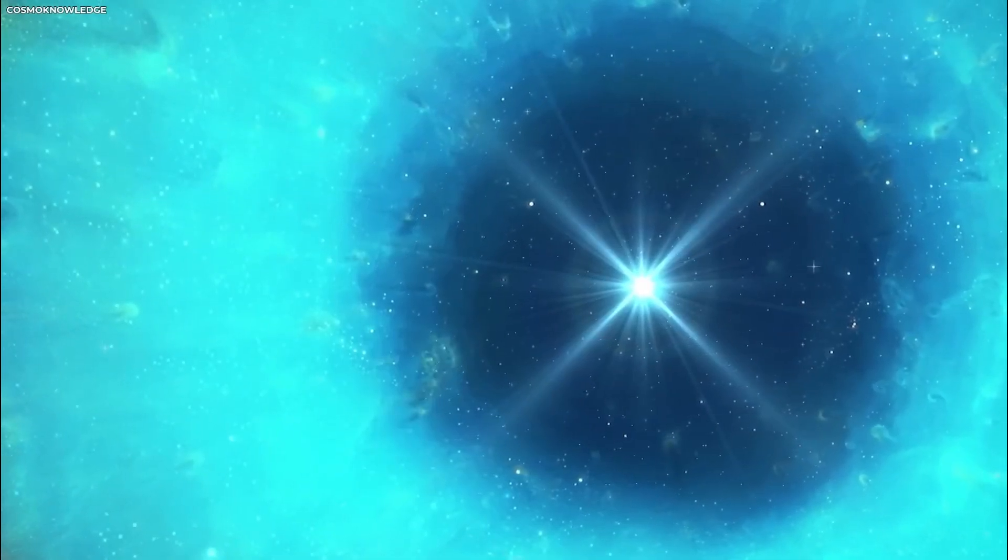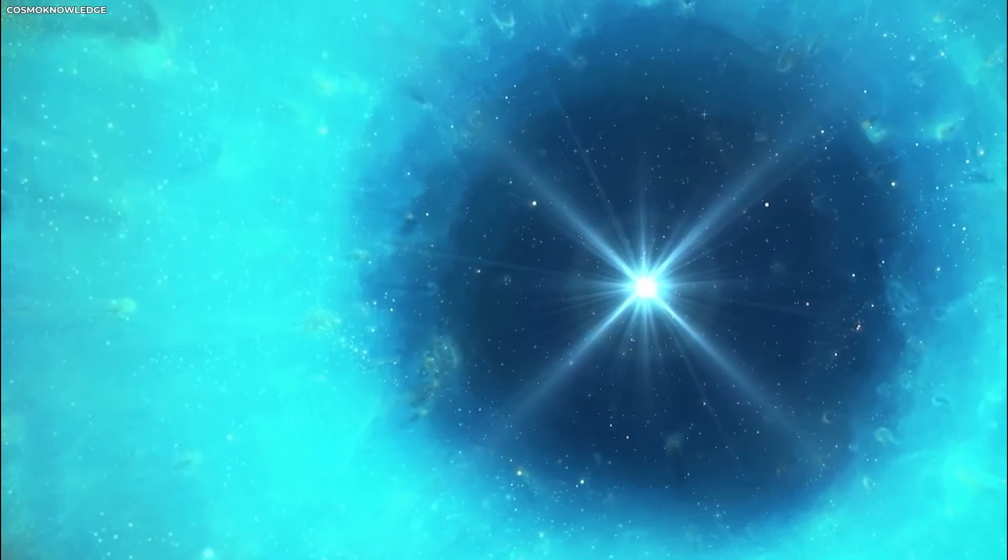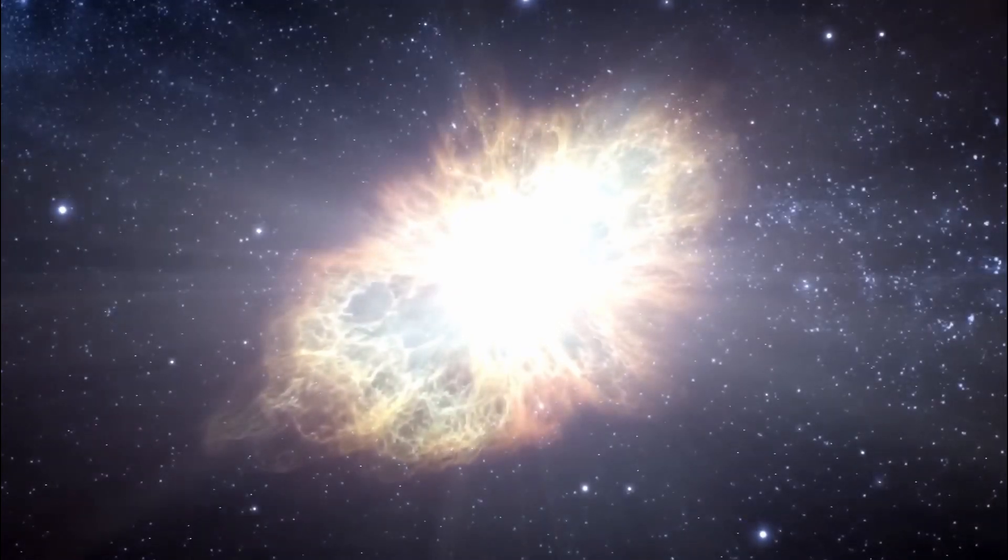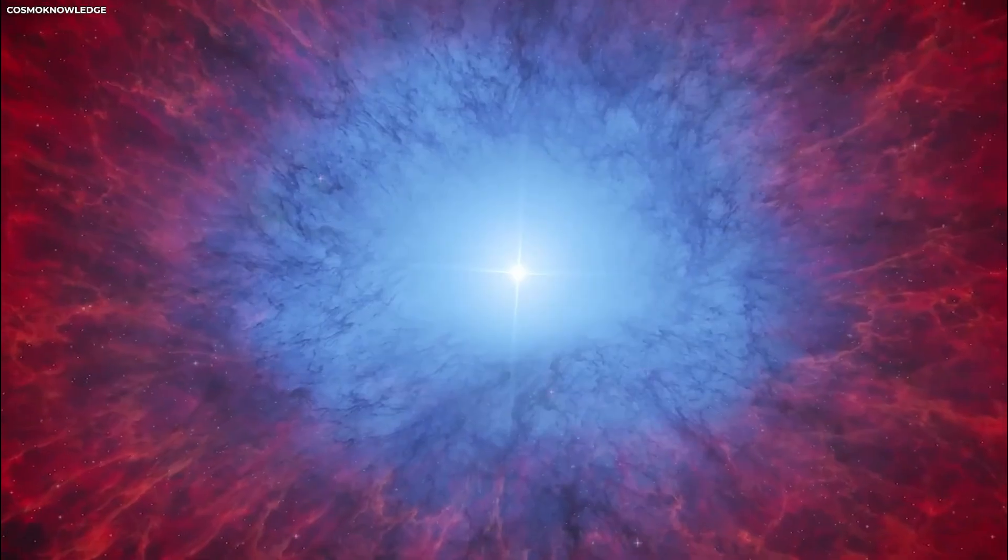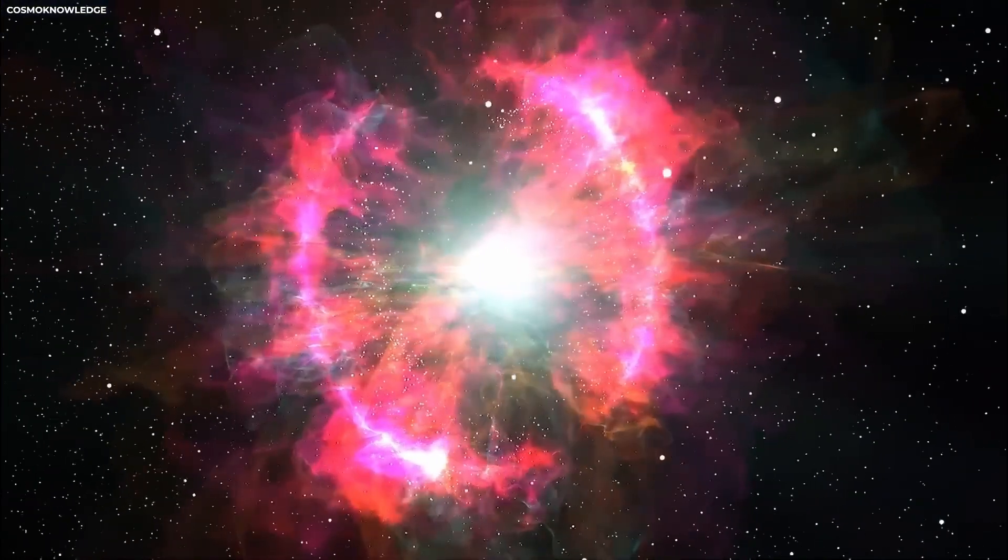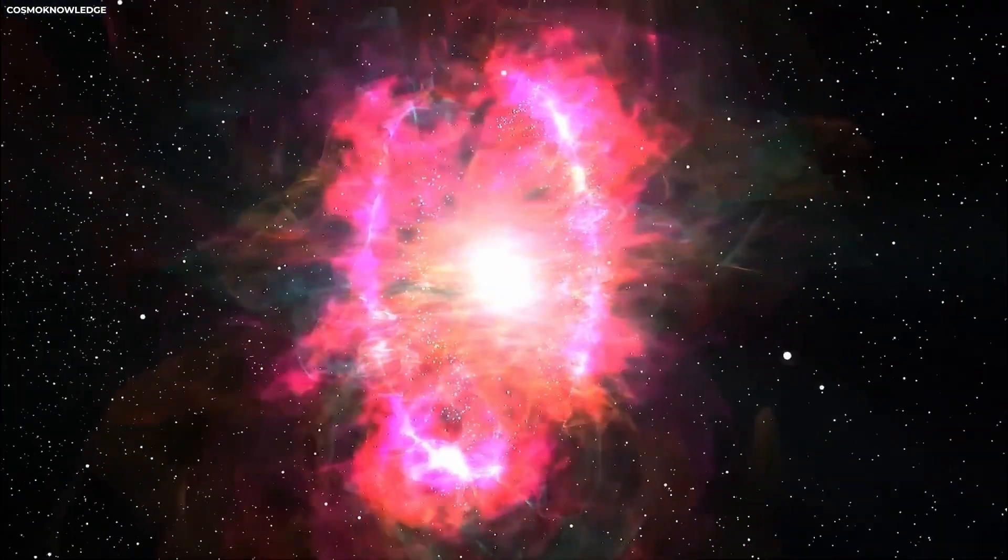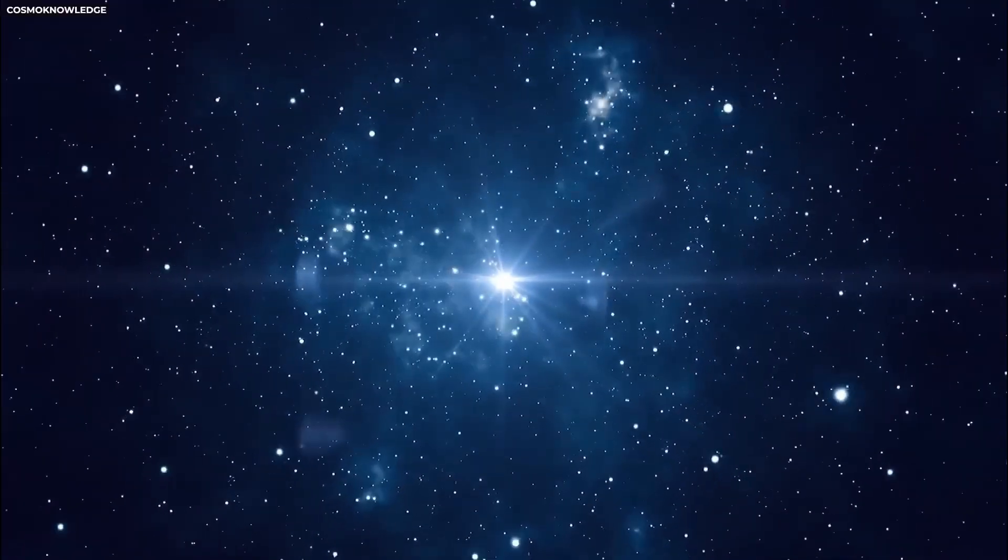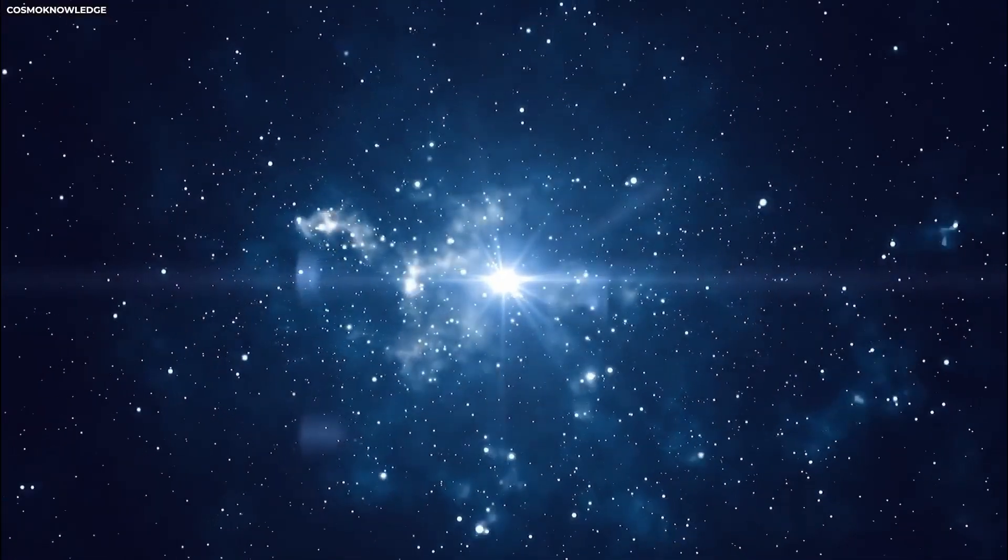A white dwarf, the residue of a low or medium-mass star exhausting its nuclear fuel, boasts tremendous density, equivalent in mass to the Sun, but condensed to Earth's size. This transformation occurs as the star depletes its nuclear fusion fuel, succumbing to gravity's collapse. Eventually, these remnants will fade from our view, mirroring the current observation of the star.